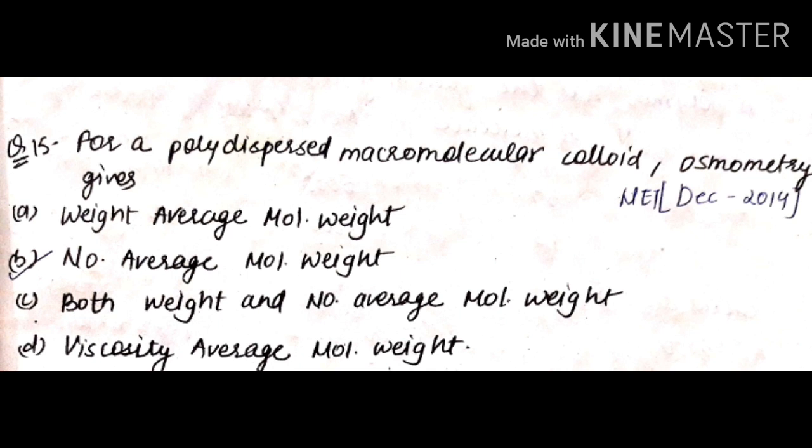Next question asked in December 2014 for two marks: for a poly-dispersed macromolecular colloid, osmometry gives — I have already told you that osmometry is used to determine the number average molecular weight. So B is the correct answer.